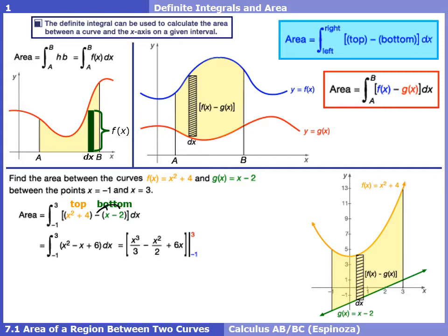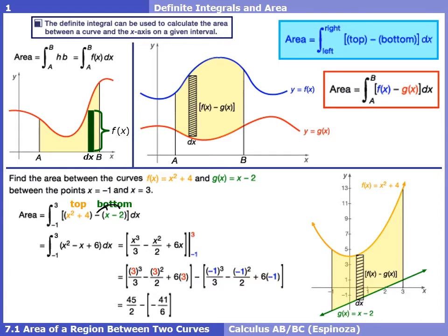Now apply the fundamental theorem of calculus: take the top bound and plug it in, take the bottom bound and plug it in, and subtract those two values. When you plug in the top bound, you'll get 45/2. When you plug in the bottom bound, you'll get −41/6. When we subtract those two values — or add them, since it's minus a negative — we end up with an area of 29.333.